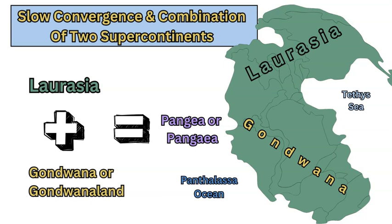Together both of these landmasses, Laurasia and Gondwana, equaled Pangaea. Around Pangaea was one very large ocean called Panthalassa, and there was a small sea as part of the larger ocean around Laurasia and Gondwana where modern-day the Middle East is, called the Tethys Sea.